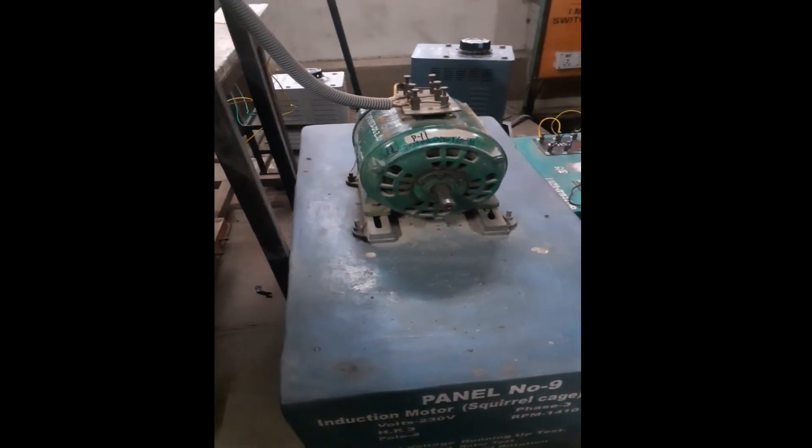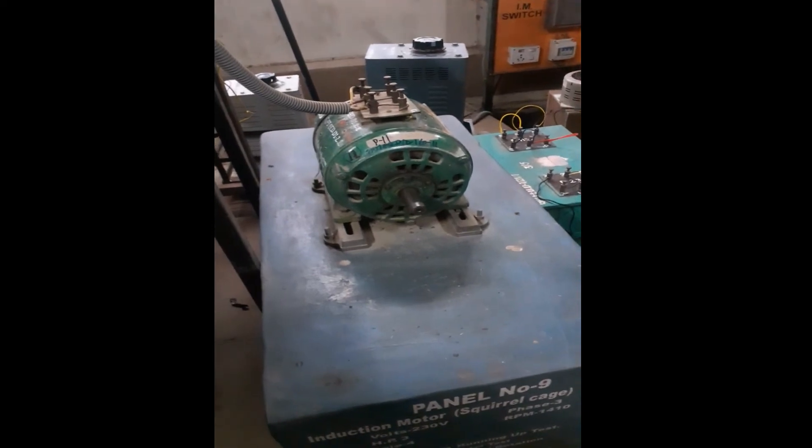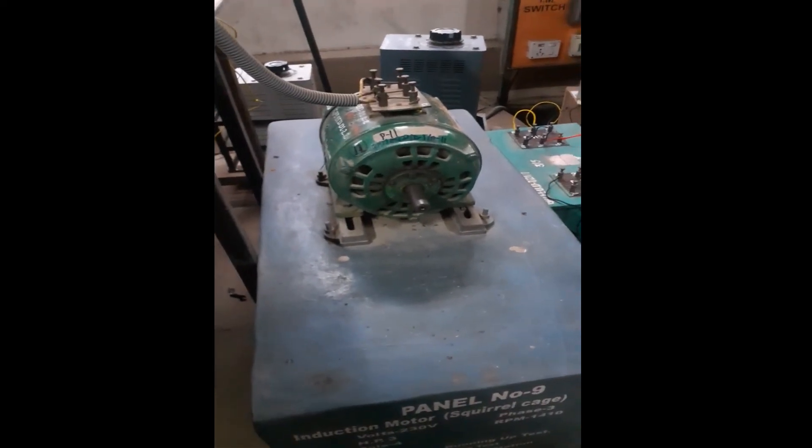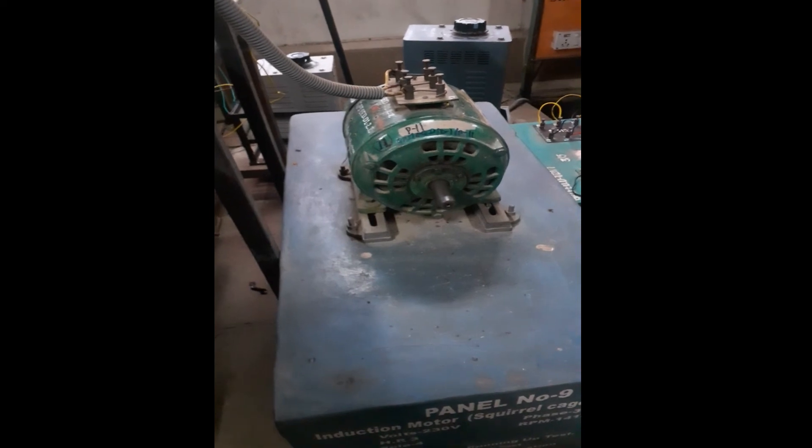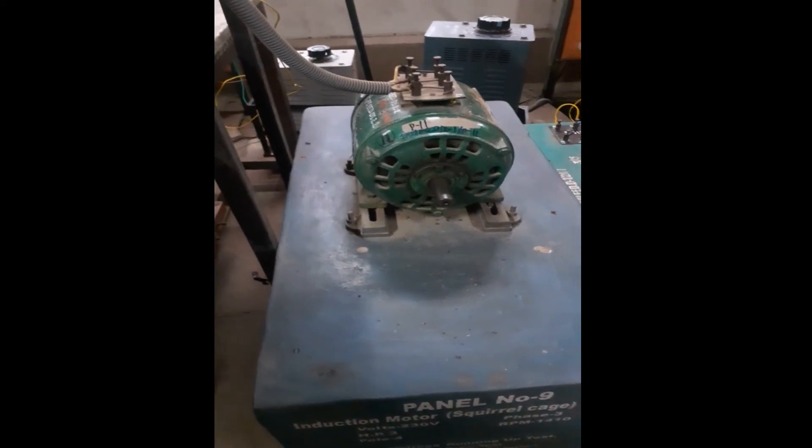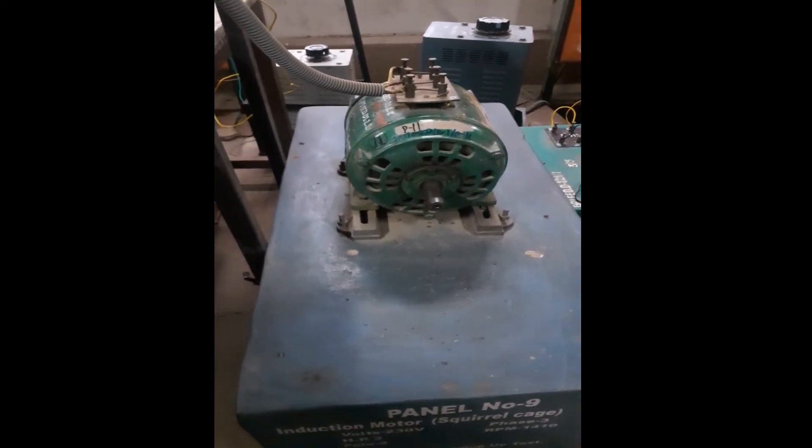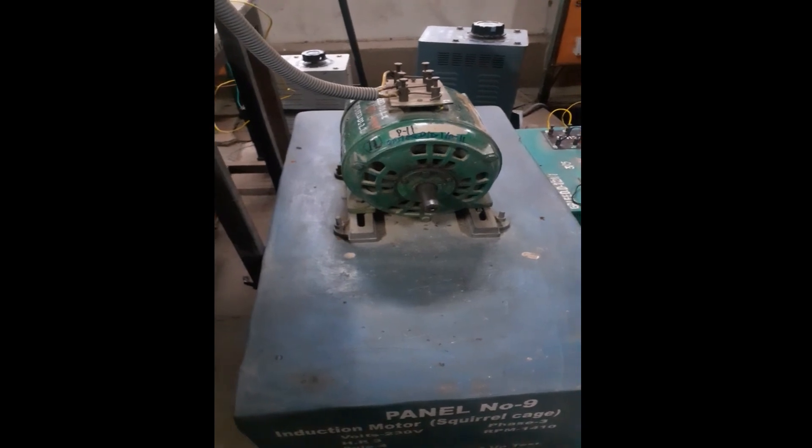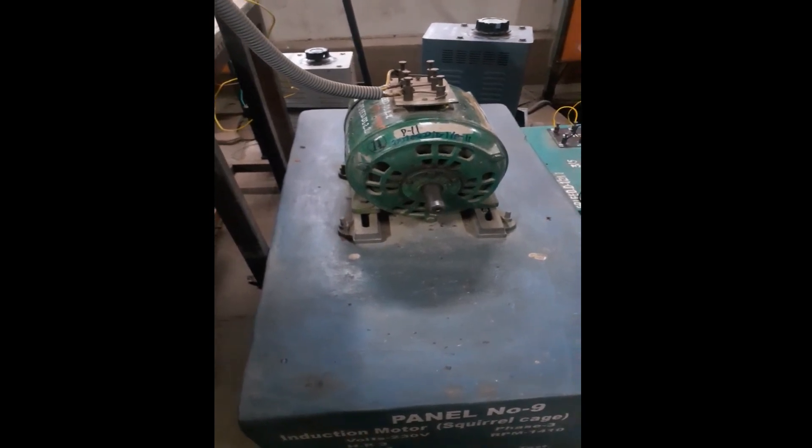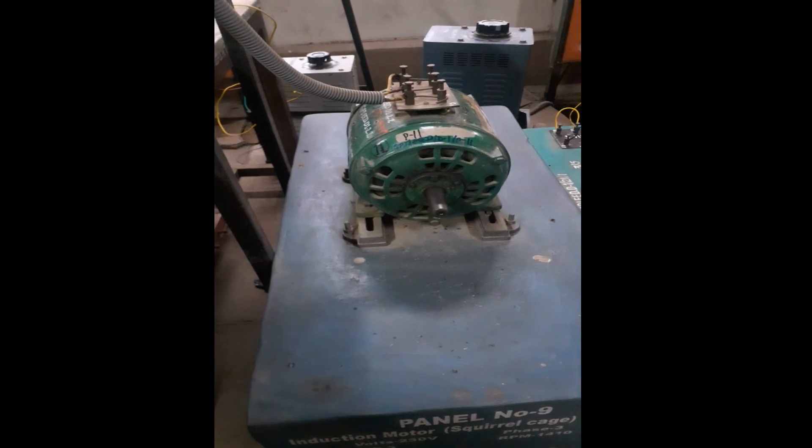This test is performed to know whether cogging or crawling effects are present in that particular motor. If reduced voltage is applied and if 7th harmonic is present in that particular motor, then your motor starts running with lower speed than that of rated value. It is called cogging or crawling.